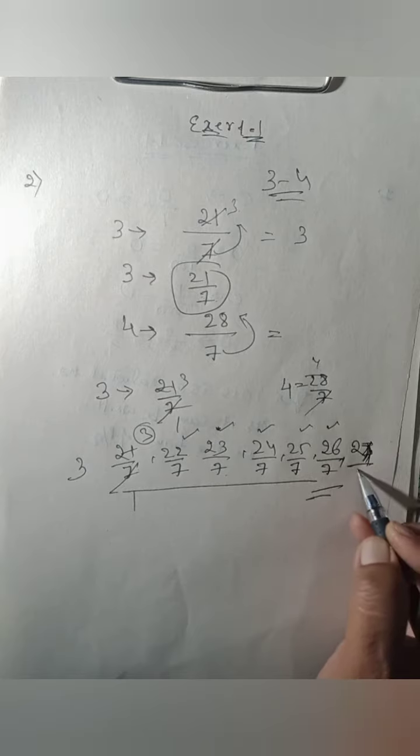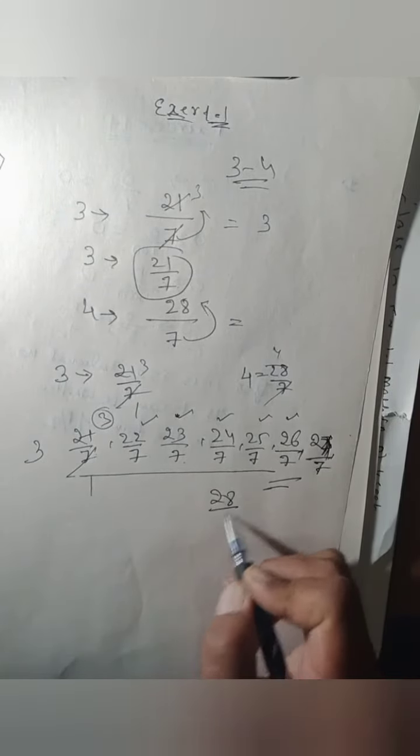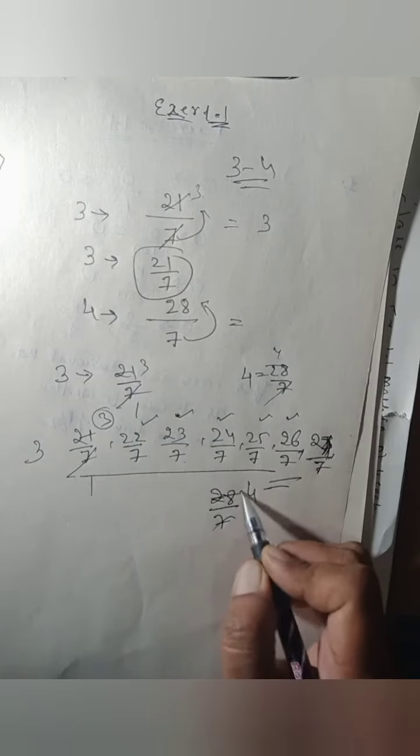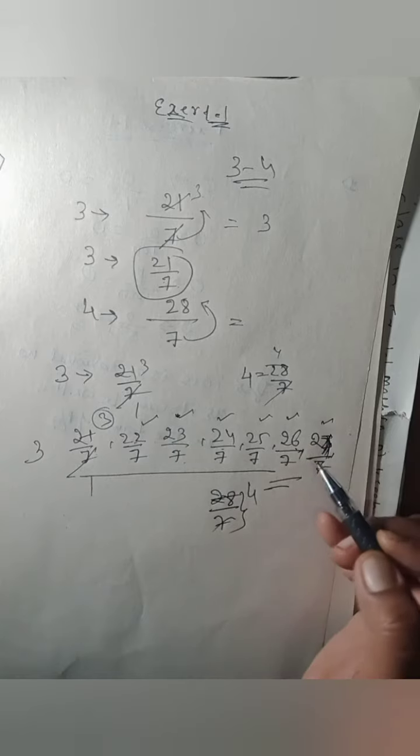Then you have 28 upon 7, which is 4. So this is between 3 and 4. 1, 2, 3, 4, 5, and 6.